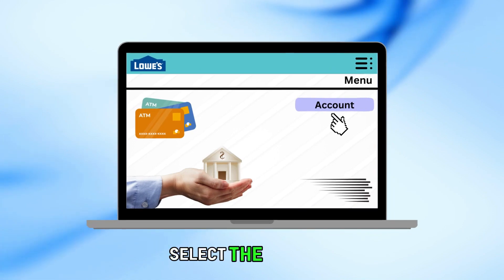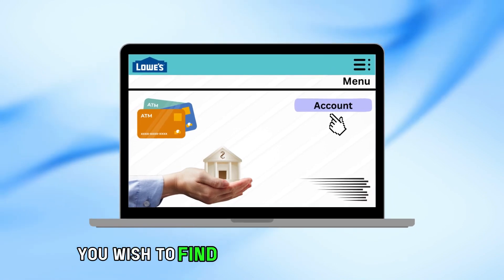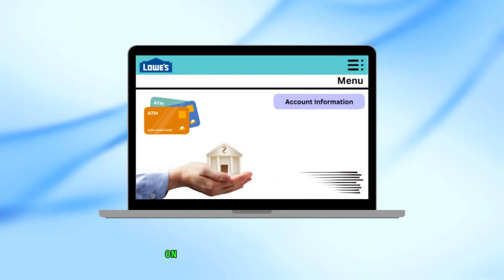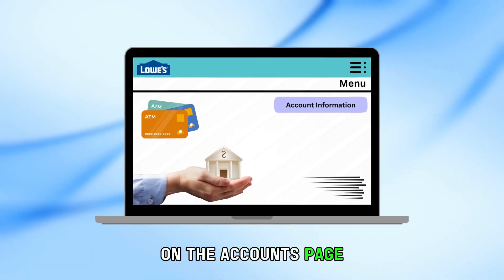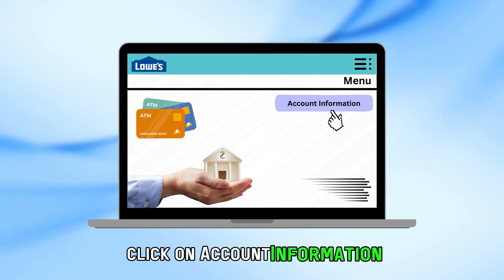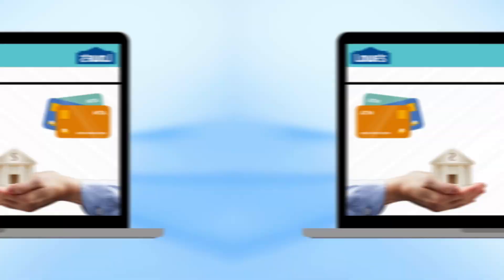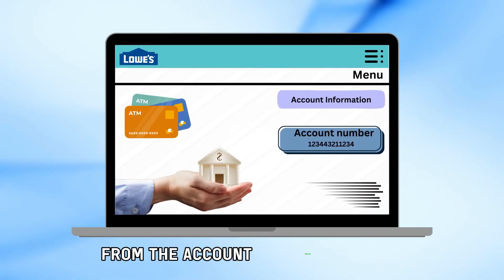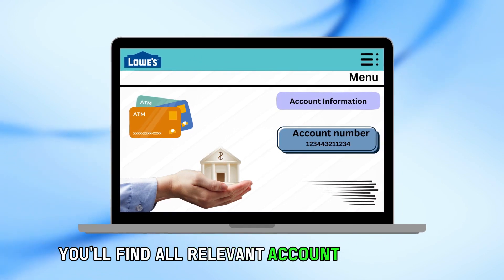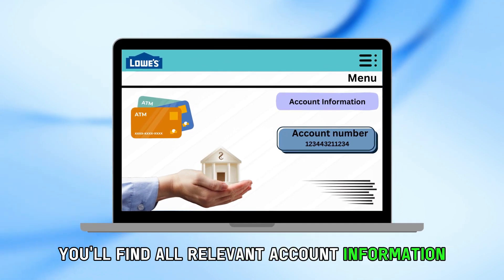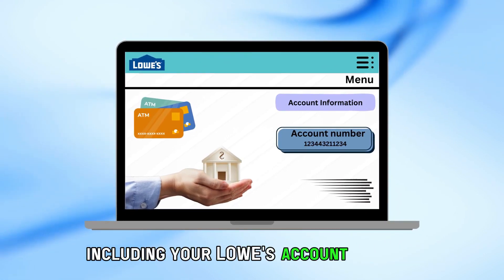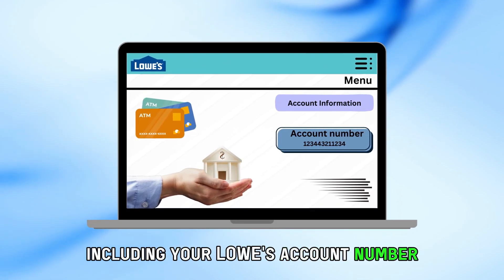Select the account you wish to find the account number for. On the Accounts page, click on Account Information. From the Account Information page, you'll find all relevant account information, including your Lowe's account number.